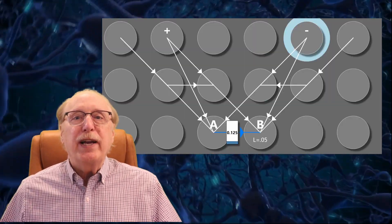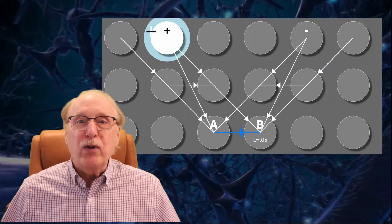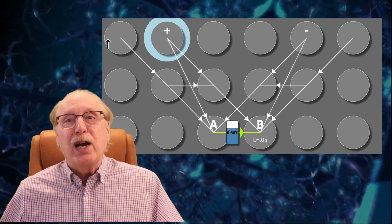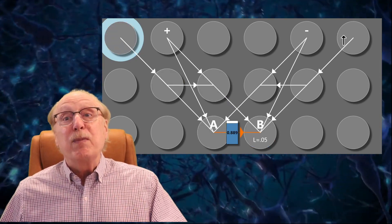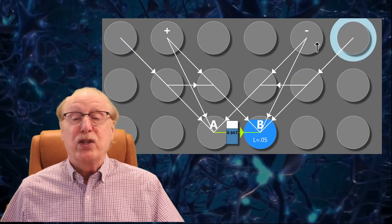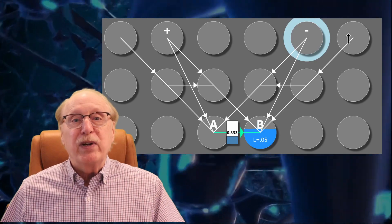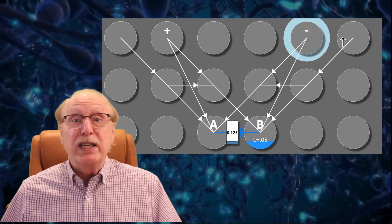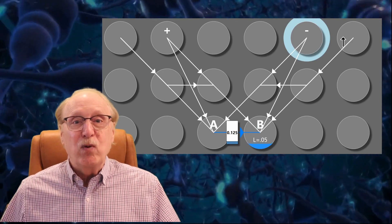That's the STDP rule in a nutshell. Here's a quick review. If the source neuron A spikes shortly before the target neuron B, the synapse weight will increase. The amount of time between the two spikes determines the amount of the increase. The closer the spikes, the greater the increase. If the target neuron spikes first, the synapse weight will be reduced.